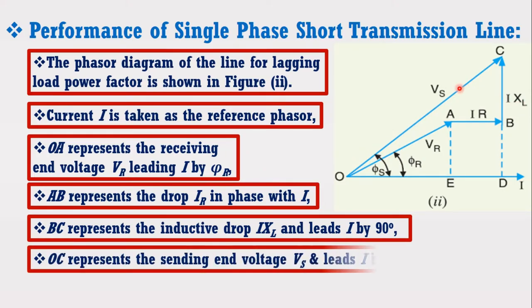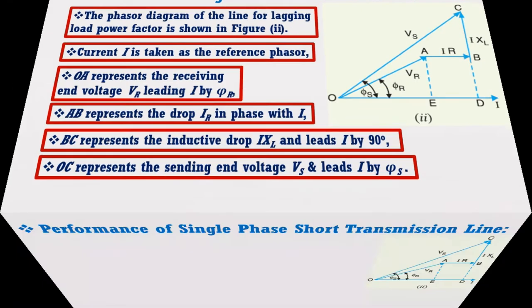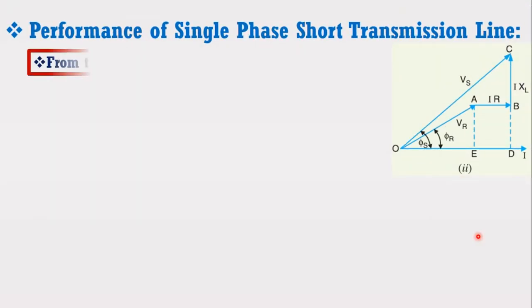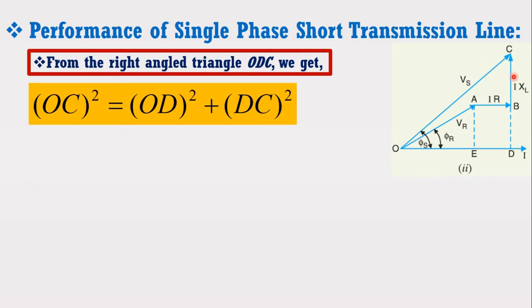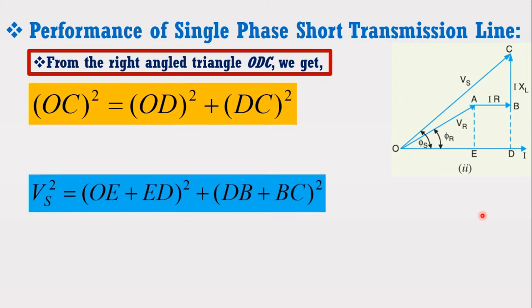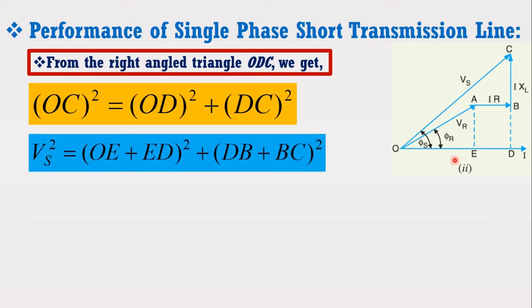OC represents the sending end voltage Vs and leads I by phi s. From the right angled triangle ODC, we get OC square equals OD square plus DC square. Putting the values of OD and DC, we get the following expression.